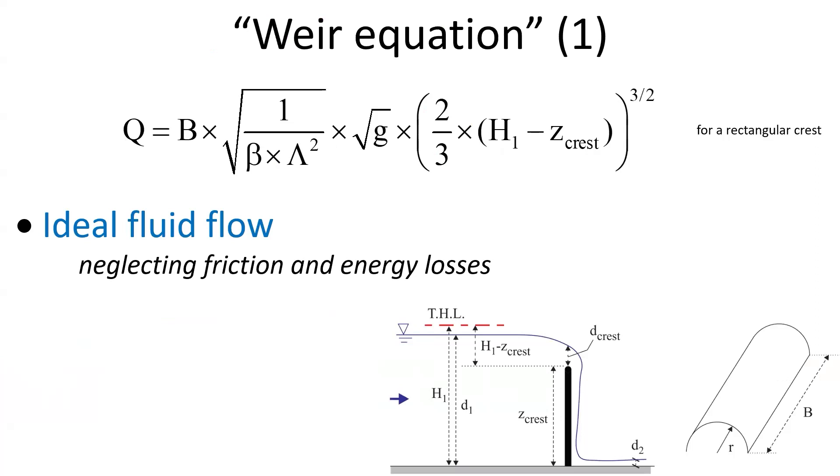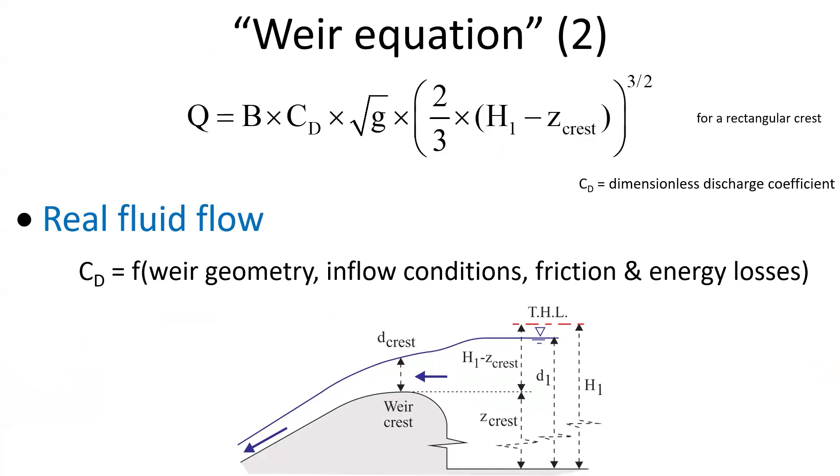Thus, we obtain the weir equation for a rectangular crest and an ideal fluid flow shown here. While for real fluid flow, we tend to express the weir equation using the dimensionless discharge coefficient Cd, which accounts for the weir geometry, the inflow conditions, and friction and energy losses.